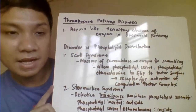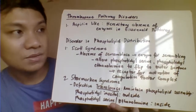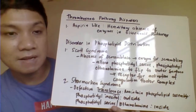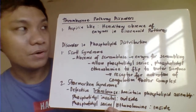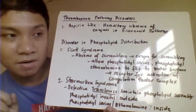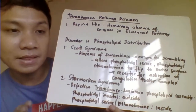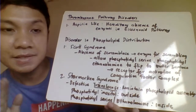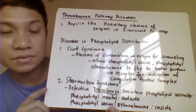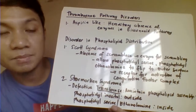Next is the problem related to the thromboxane pathway or icosanoid pathway. Aspirin-like disorder is characterized by a hereditary deficiency of enzymes needed for the thromboxane pathway: phospholipase A2 converts phosphatidylinositol to arachidonic acid; cyclooxygenase converts arachidonic acid to prostaglandin; and thromboxane synthase converts PGH2 to thromboxane. If a patient has a genetic deficiency of these enzymes, this becomes an aspirin-like disorder.